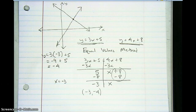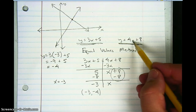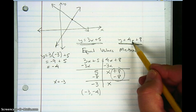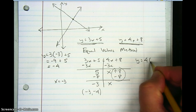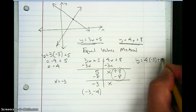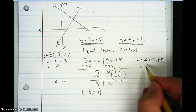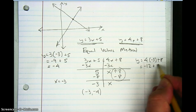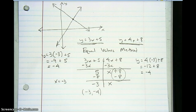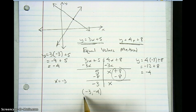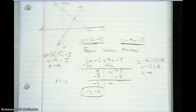Just to show I could have picked either equation, I'll put negative 3 into y equals 4x plus 8: y equals 4 times negative 3 plus 8, which is negative 12 plus 8, which equals negative 4. No matter which equation I use, plugging in negative 3 gives negative 4. So the solution for this system is negative 3, negative 4.